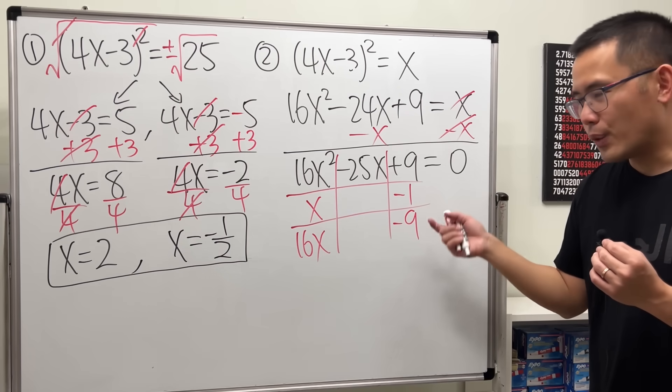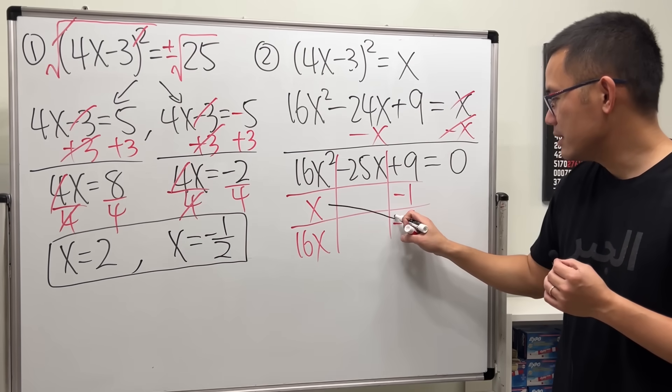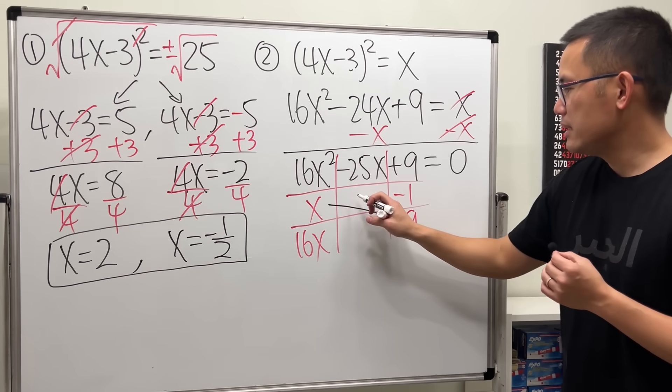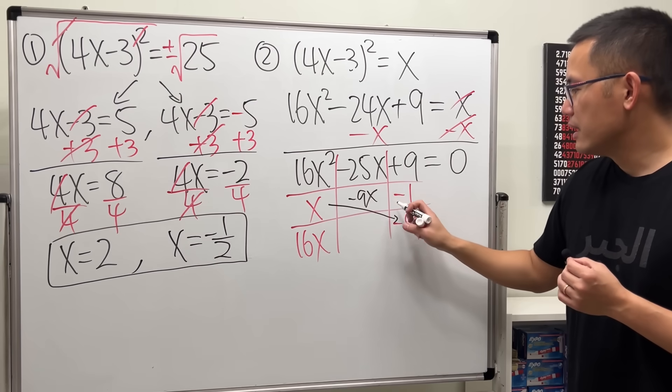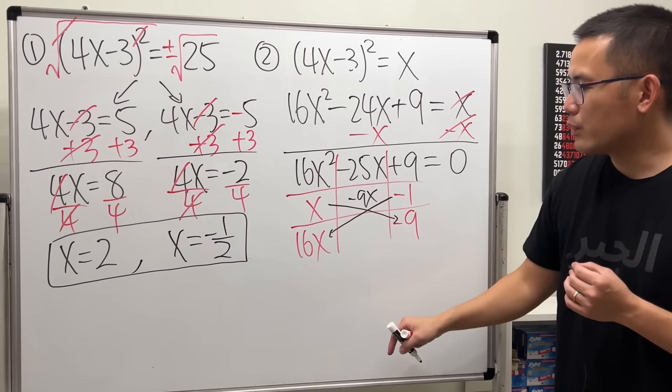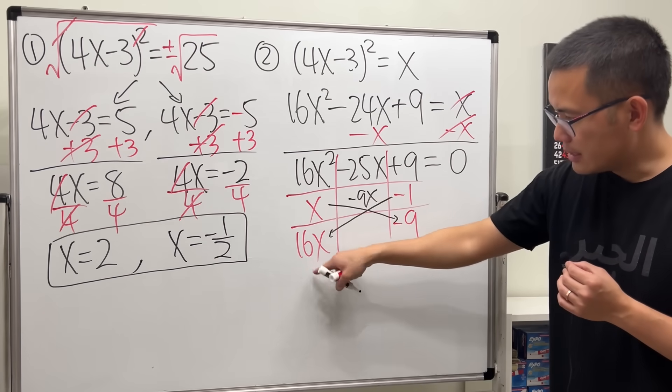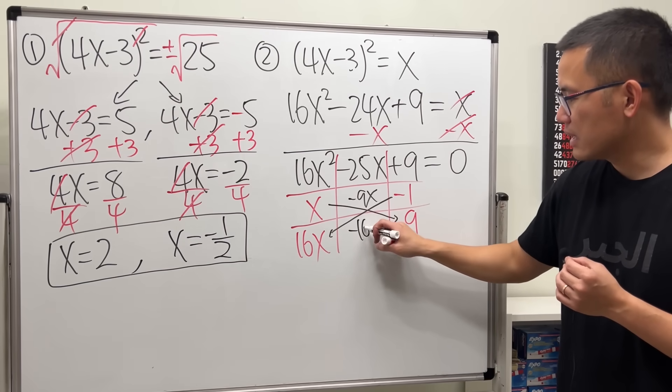I'm going to put a negative 1 right here and negative 9 right here. This is correct. Why? Because we take this times this. x times negative 9 is negative 9x. x, negative 1, take that multiply with 16x,